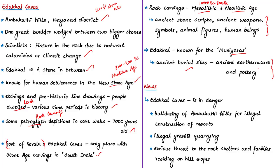The news article states that these caves and rock carvings are of historic importance but are in danger. This danger comes from bulldozing the Ambukuti Hills for illegal construction of resorts, happening on private land despite a ban on all types of construction on the premises and nearby areas of the caves to conserve the Neolithic engravings. There is also illegal granite quarrying happening in these hills, which is a huge threat to the rock engravings. As a result of unscientific constructions and mining activities, there have been landslips and mudslides in the ecologically fragile area, becoming a serious threat to the rock shelters and hundreds of families residing on the hill slopes.